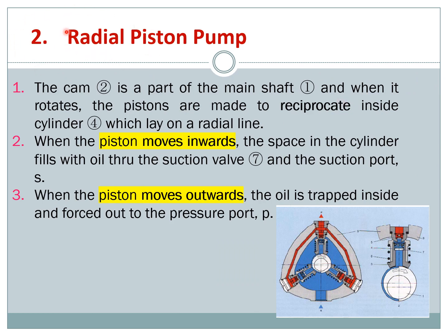We also have a radial piston pump. You can see the numbering here — one, two, three, up to nine — and you have suction port S and pressure port P. The cam is part of the main shaft. When the main shaft rotates, the pistons are made to reciprocate inside the cylinder.